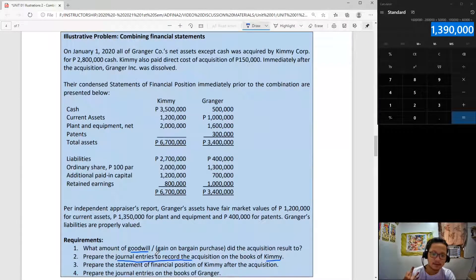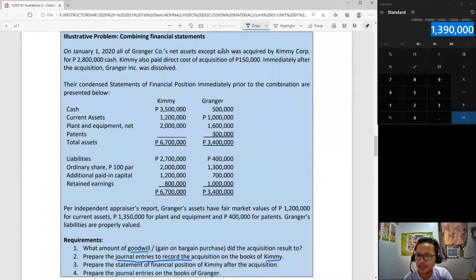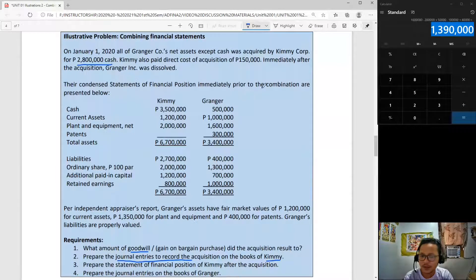On January 1, all of Granger Company's net assets except cash was acquired by Kimi for 2,800,000 cash. All these assets except for cash were acquired by Kimi, and net assets means liabilities as well were assumed, paying cash of 2,800,000. So 2,800,000 is our acquisition cost.